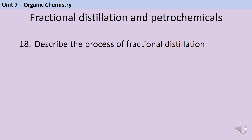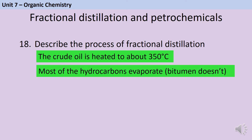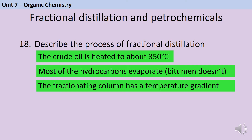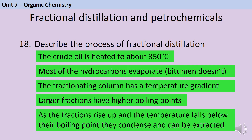The three most important words when describing fractional distillation are heating, evaporating and condensing. The crude oil is heated to about 350°C. At this point almost all of the alkanes evaporate, although bitumen is left behind because its boiling point is higher than the temperature of the furnace. Within the fractionating column there is a temperature gradient — hot at the bottom and cooler higher up. The different fractions have different boiling points; larger fractions have much higher boiling points and therefore condense first.